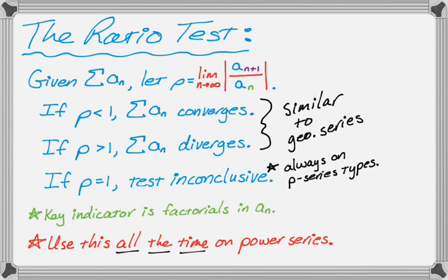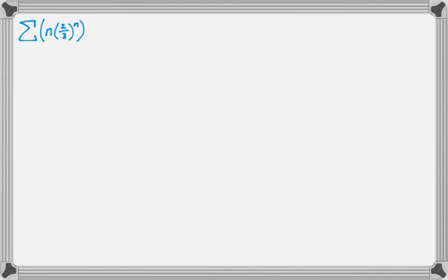So now we're going to do two examples. So the first example is the sum of n times 2 thirds to the n. I'm going to use a ratio test because this is a ratio test video.